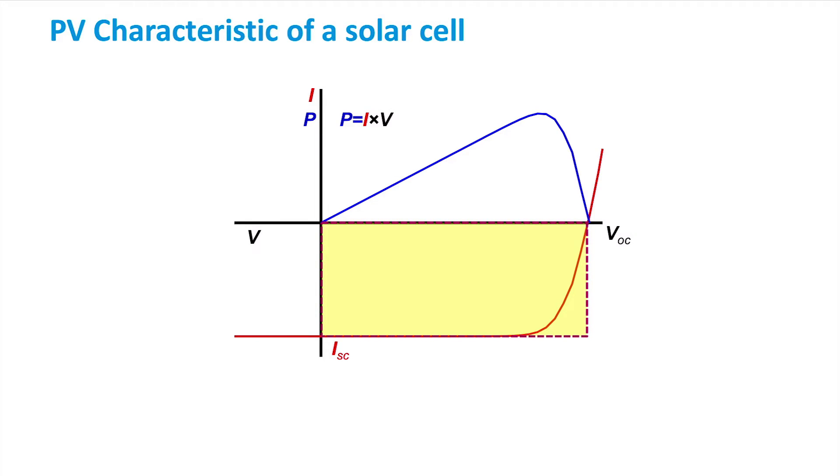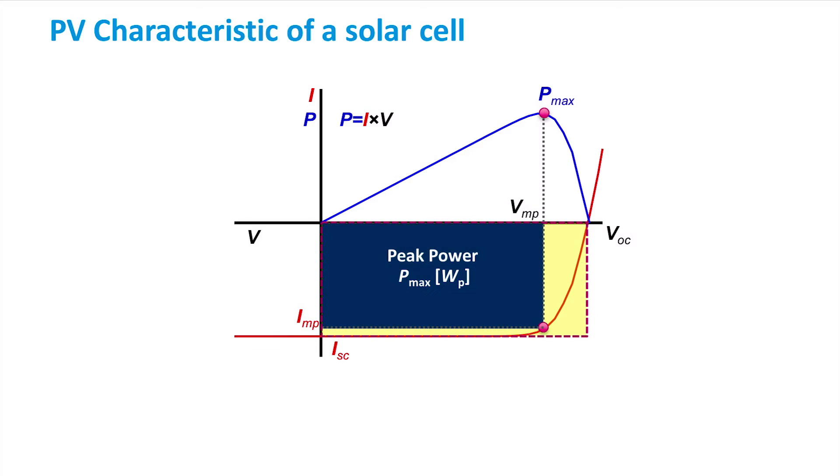Now we can see the power as a function of voltage. We can see that there is a point where the power generated by the solar cell is maximized. We call this our maximum power point. The voltage at this maximum power point is given here as VMP and the current as IMP. You can see that the VMP is less than the VOC and the IMP is less than the ISC. This is always the case. The product of VMP and IMP gives the maximum power we can generate, which we denote here as Pmax.